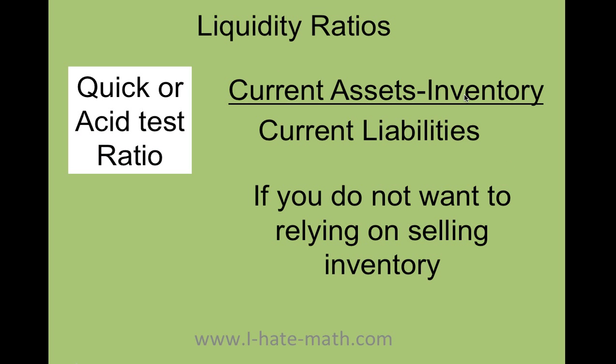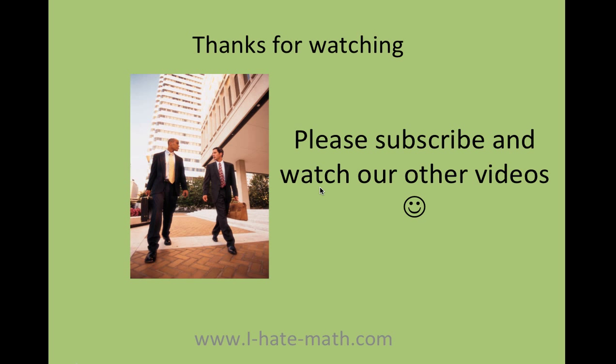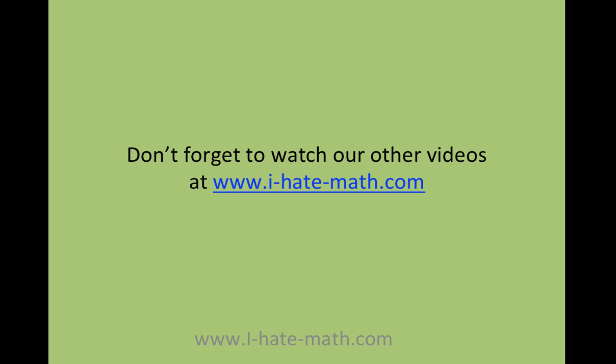Now, the quick or acid test ratio. This is basically almost the same formula. The only thing is that you're going to take the inventory away. Why do you want to do that? Well, sometimes the inventory might not sell right away. So this is actually a quick test ratio to figure out how a company is able to pay its short-term obligations without relying on the inventory. And that's it. Thank you so much for watching. Please subscribe and watch our other videos, and thanks so much for learning.